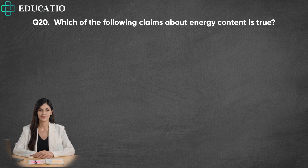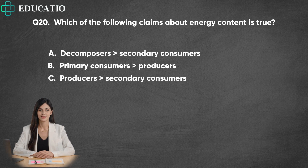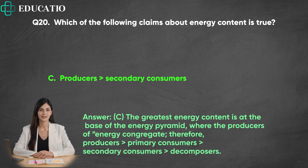Question 20. Which of the following claims about energy content is true? A. Decomposers, secondary consumers. B. Primary consumers, producers. C. Producers, secondary consumers. D. Secondary consumers, primary consumers. Answer: The greatest energy content is at the base of the energy pyramid, where the producers of energy congregate. Therefore, the correct order is: producers, primary consumers, secondary consumers, decomposers.